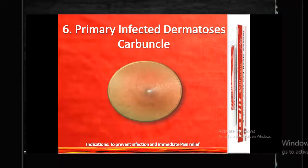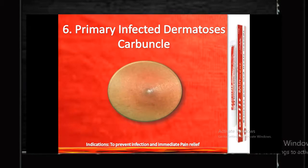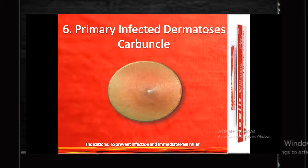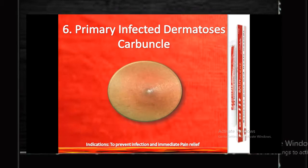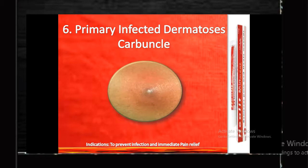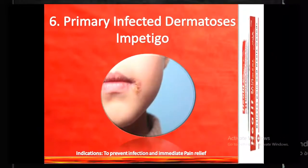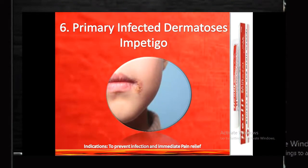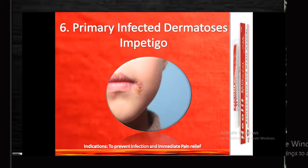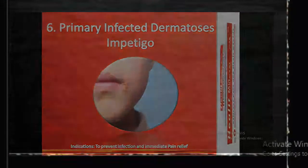A carbuncle is a red, swollen, and painful cluster of boils that are connected to each other under the skin. Impetigo appears as red sores on the face and is contagious.